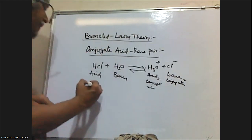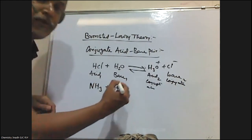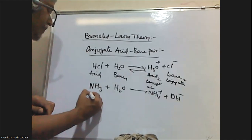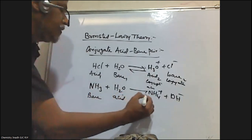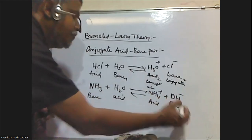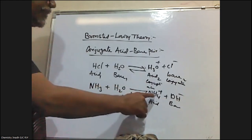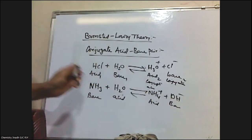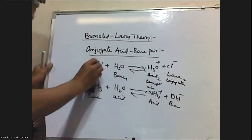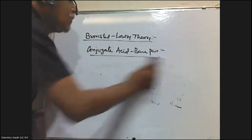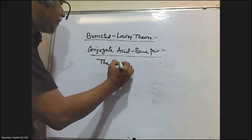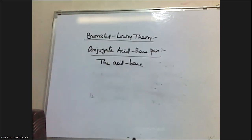Let me take one more example: NH3 plus H2O giving NH4⁺ plus OH⁻. Here, NH3 is the base and H2O is the acid. In the reverse reaction, NH4⁺ is the acid and OH⁻ is the base. As NH3 is a base, there is a corresponding Conjugate Acid, NH4⁺. And H2O is an acid with corresponding Conjugate Base OH⁻. A conjugate acid-base pair is one that differs by a single proton.